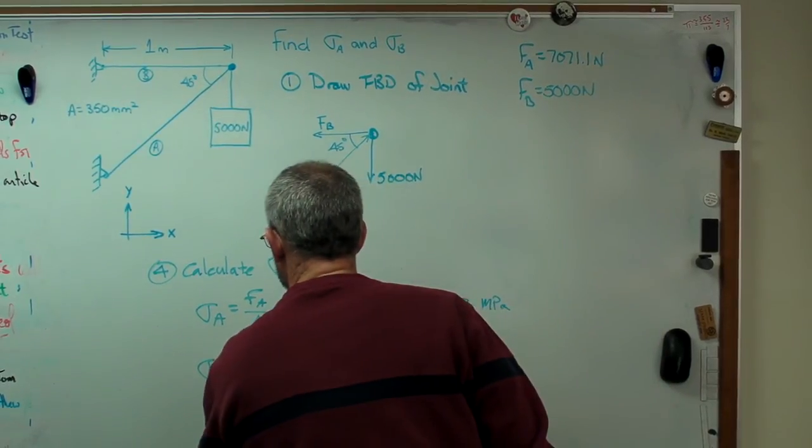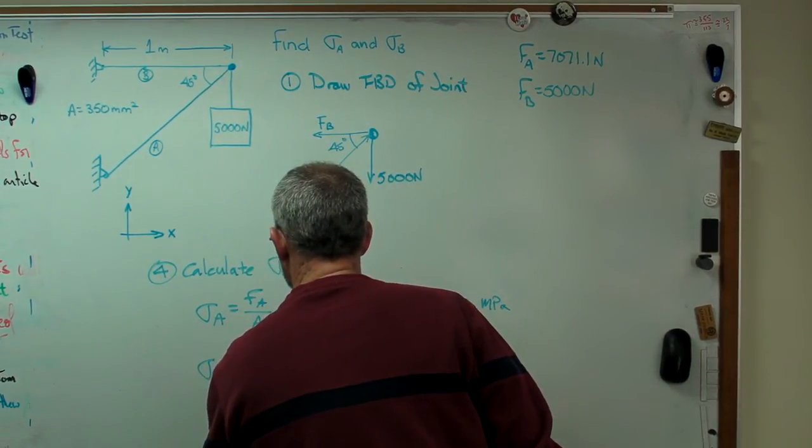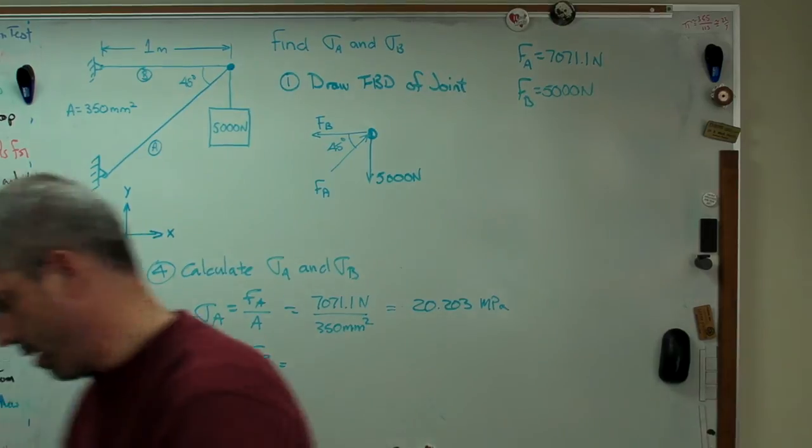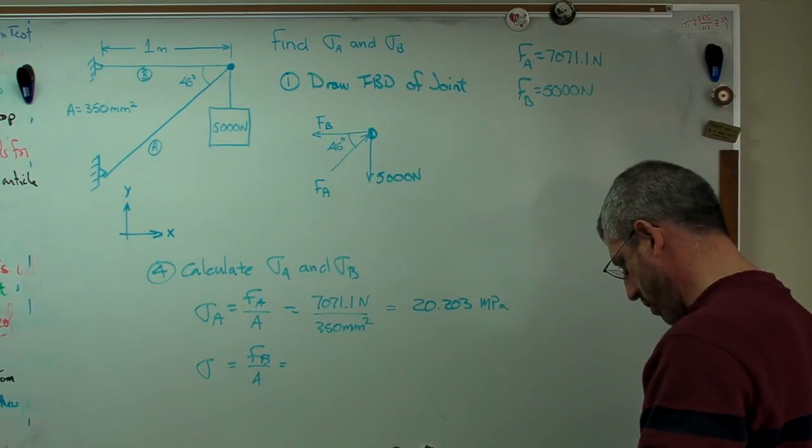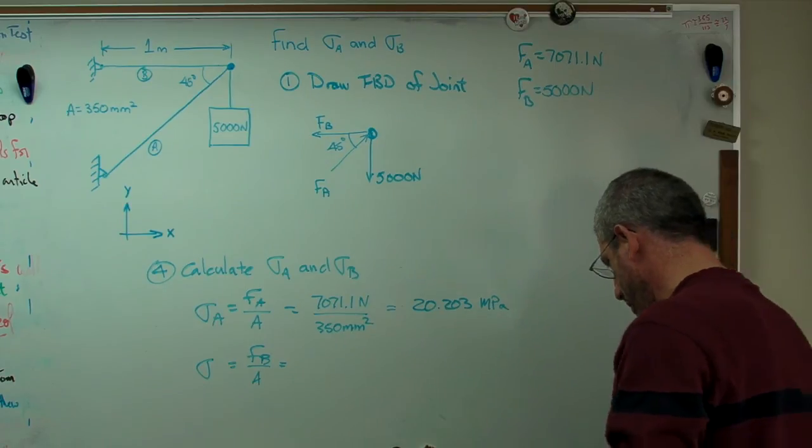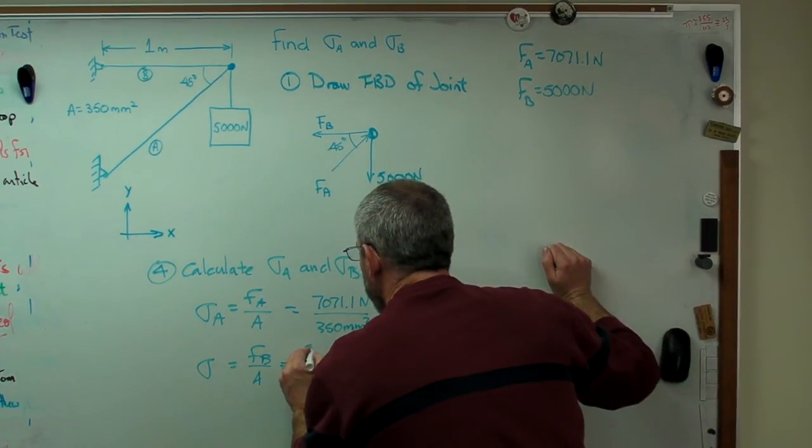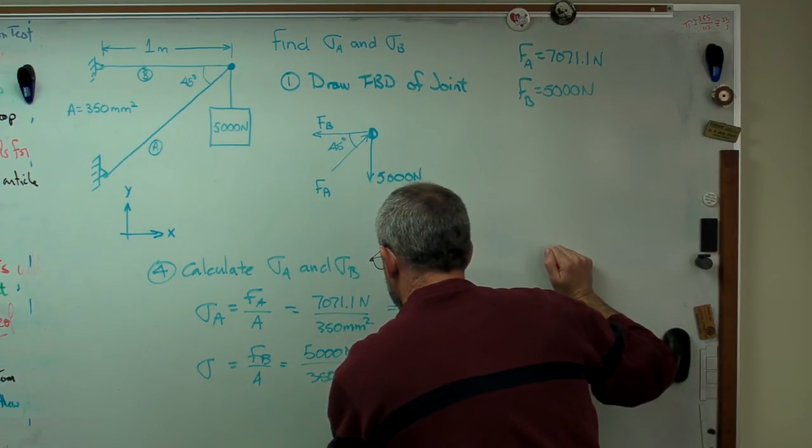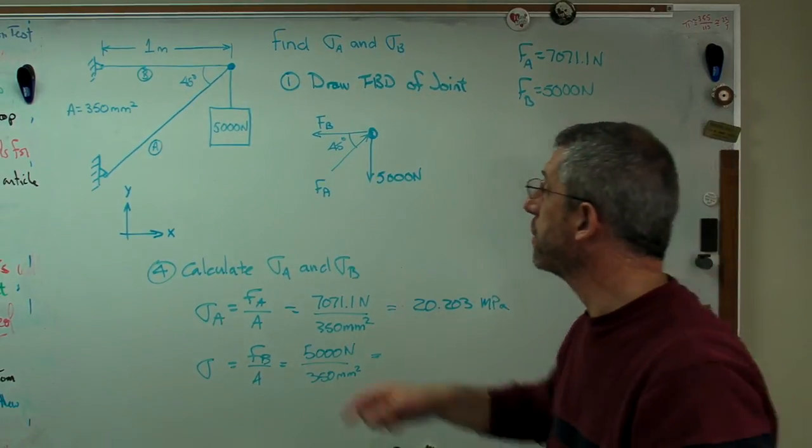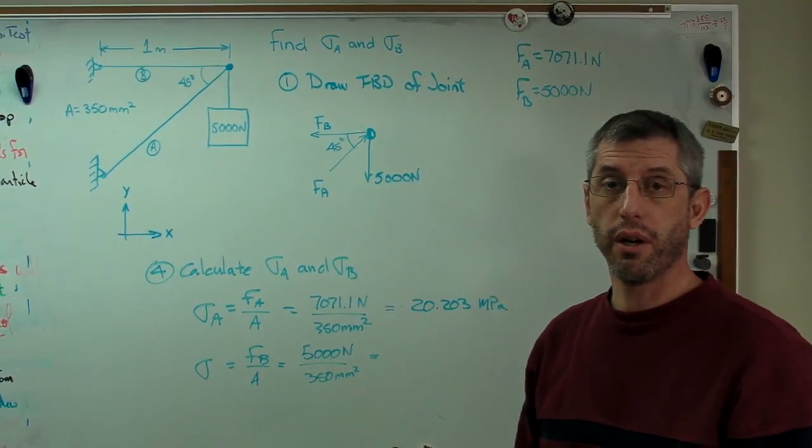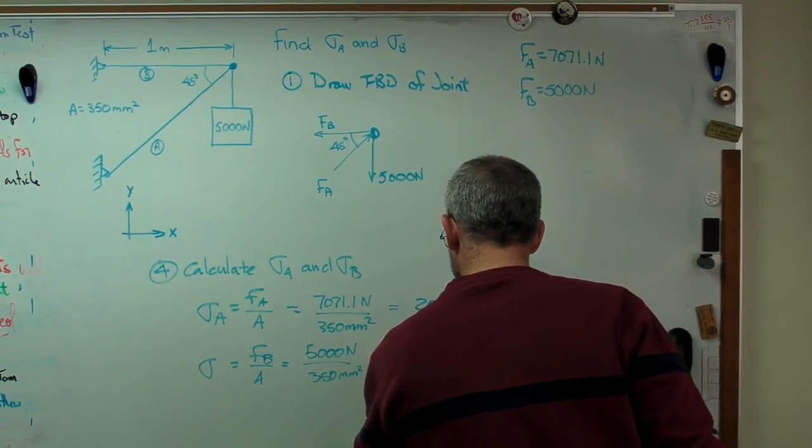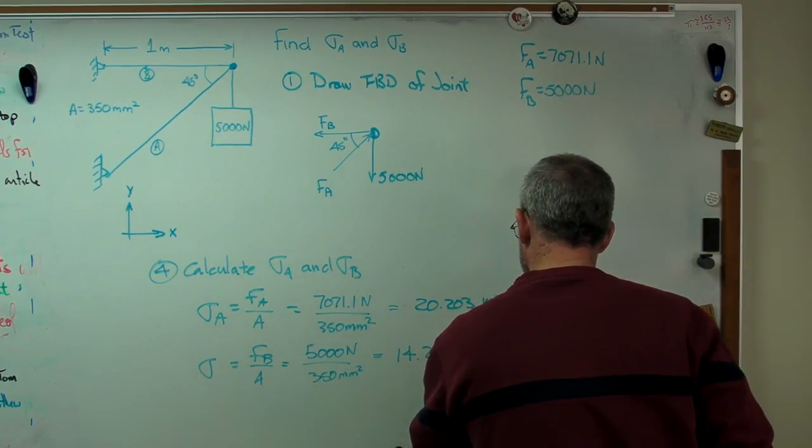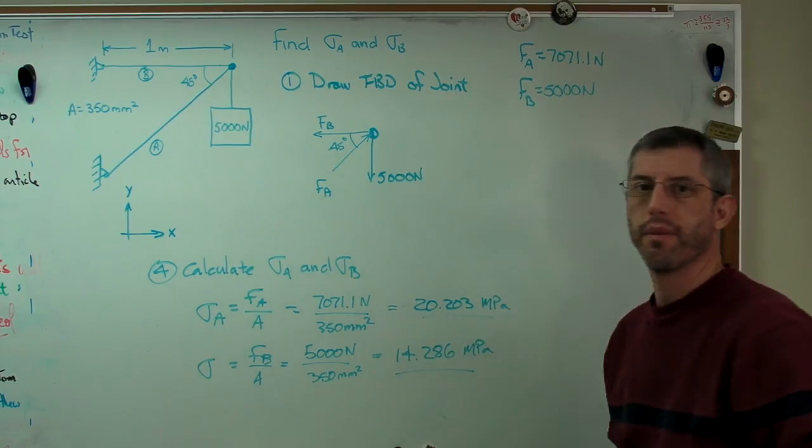And here, I see I didn't do this on my cheat sheet here. This is going to be 5,000 newtons. Okay, again, divided by 350 millimeters squared because I've assumed the same cross-sectional area for both elements. And this turns out to be 14.286 megapascals. There you go.